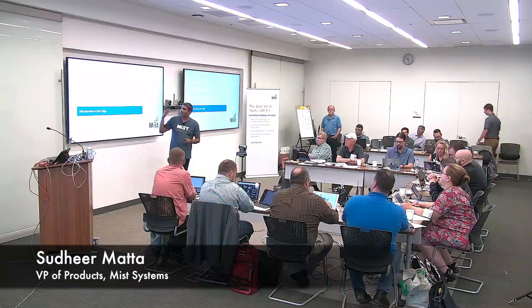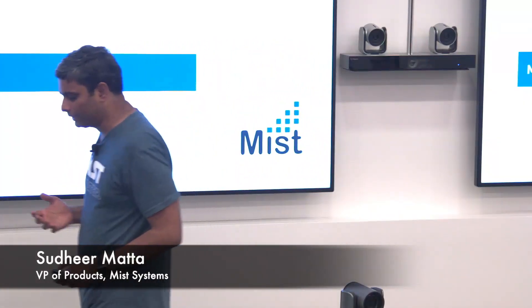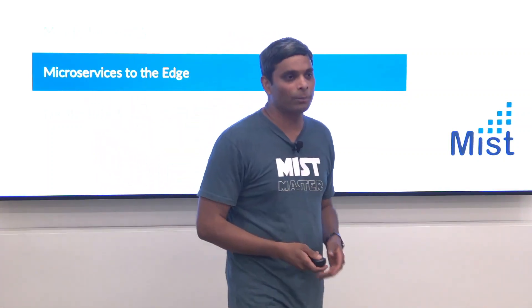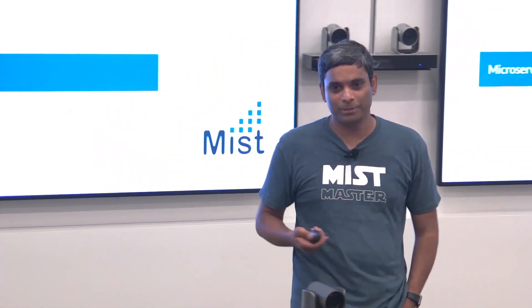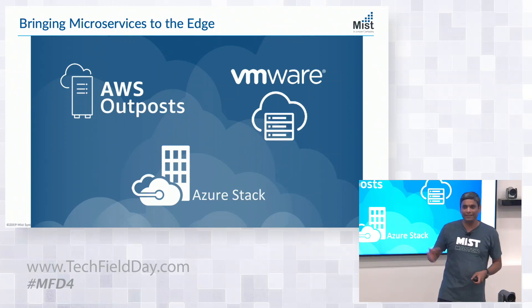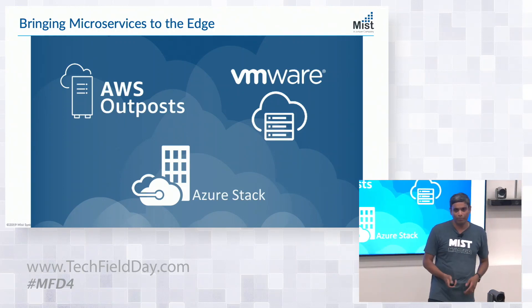We basically took the microservices architecture of our cloud and brought it down on-prem closer to the edge. This is actually not just Mist - if you see in the industry today, Amazon Outposts, Azure Stack, and VMware Dimension, the edge is being redefined. Everybody loves the agility and feature velocity and manageability of the public cloud architecture, so we're bringing that kind of architecture down to the on-prem world.